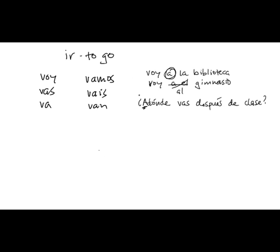In addition to using ir for simply rendering going to one destination or another, voy a la biblioteca, voy a clase, voy a la casa de mi amigo, whatever it might be, you can also use ir, plus a, plus the infinitive of some other verb, the unconjugated form, to render going to do something.